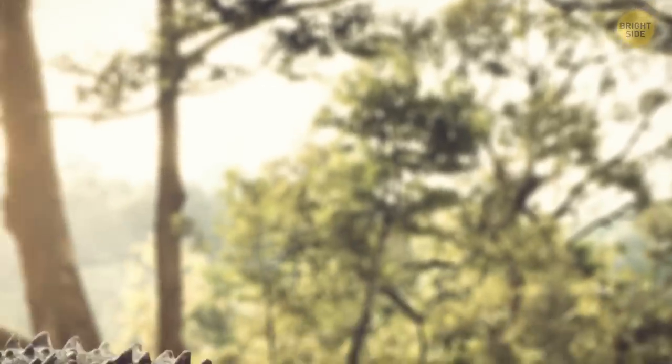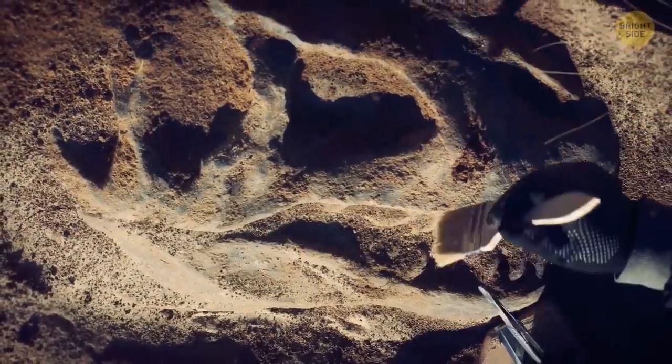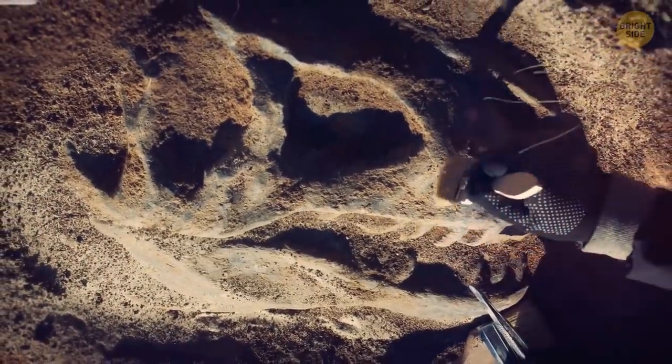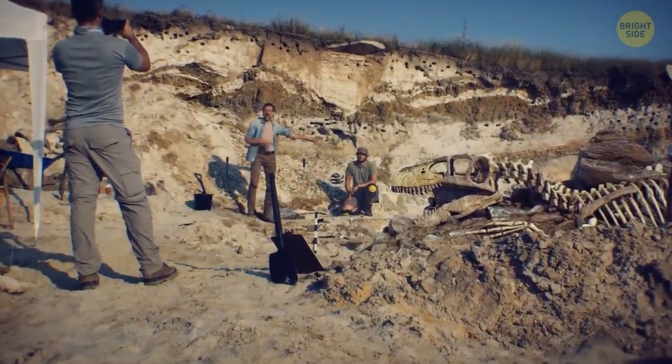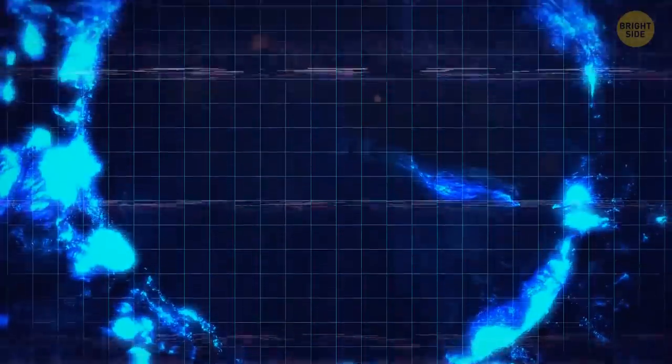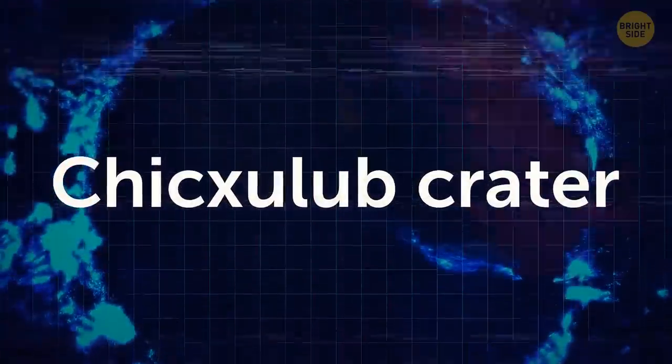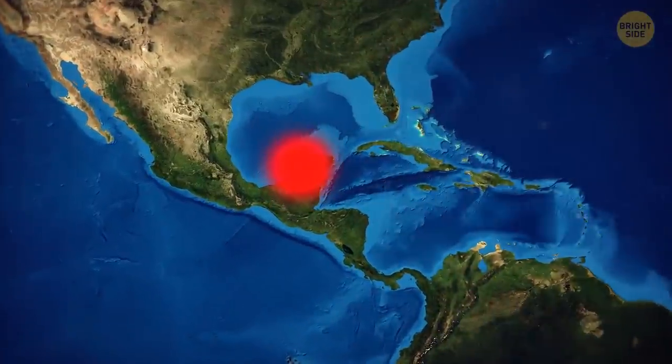Okay, remember dinosaurs? I don't. I wasn't around then. But they disappeared a long time ago. Yet how that happened was still up for debate within the scientific community for a very long time. Up until 1991, no less. The year the Chicxulub crater was discovered. That's a big hole located underneath the Yucatan Peninsula in Mexico. Many claim it was formed when a giant asteroid crashed on Earth.